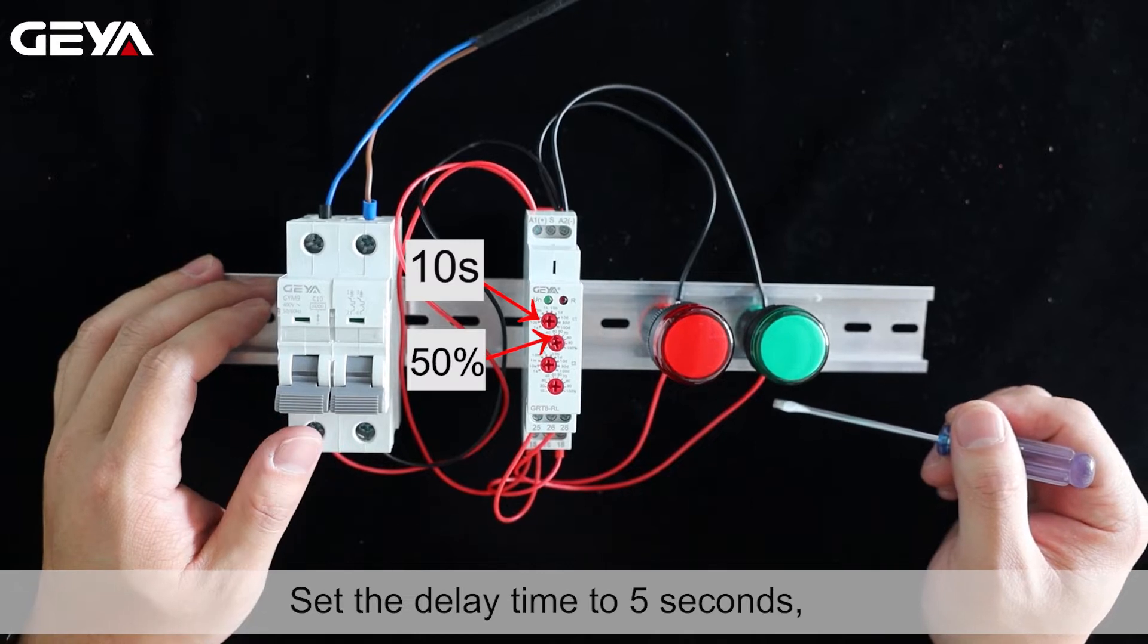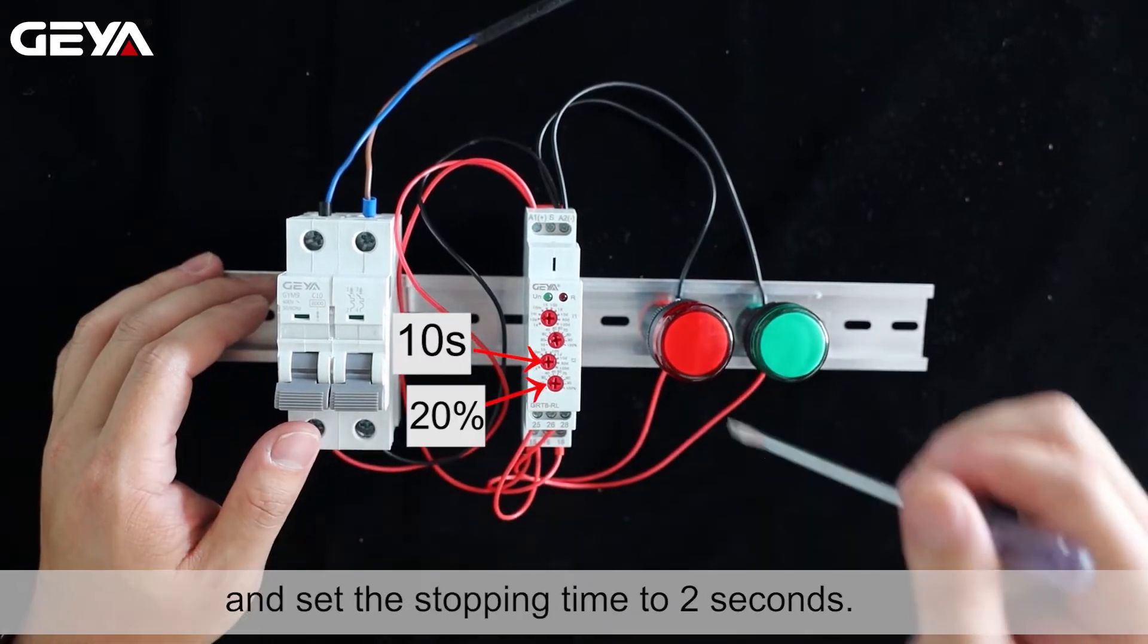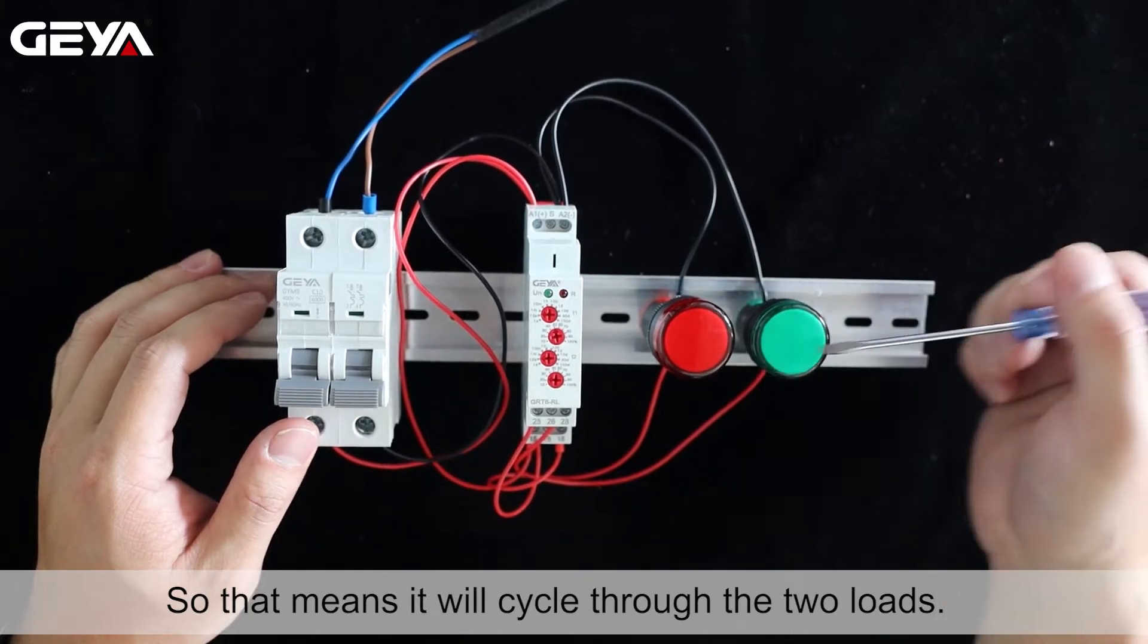Set the delay time to 5 seconds, and set the stopping time to 2 seconds. So that means it will cycle through the two loads.